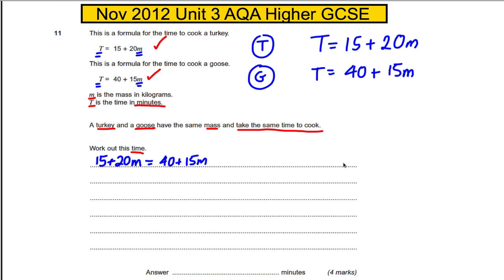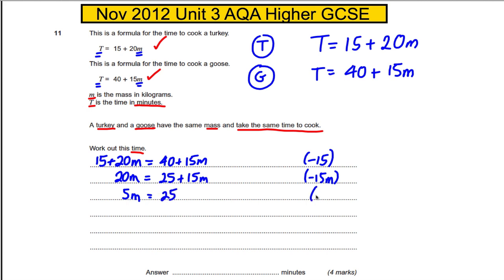Now let's do some basic algebra. Subtract 15 from both sides: 20M = 25 + 15M. Subtract 15M from both sides: 5M = 25. Divide both sides by 5, and we get M = 5 kilograms. So the mass is 5 kilograms, but the question asked for the time.